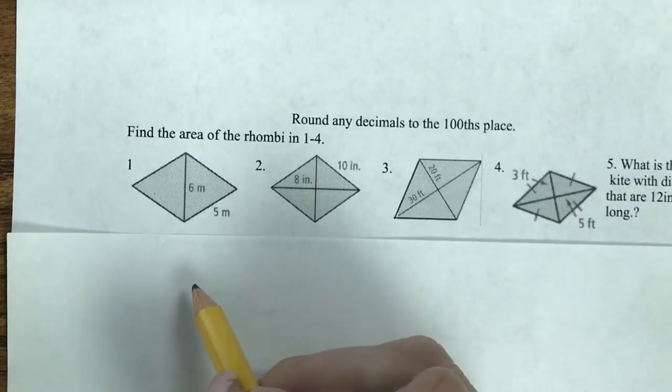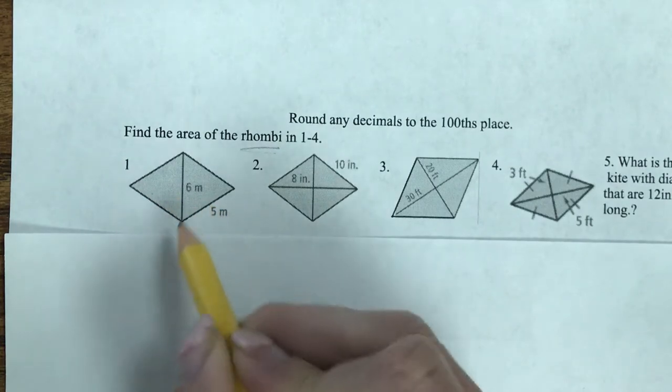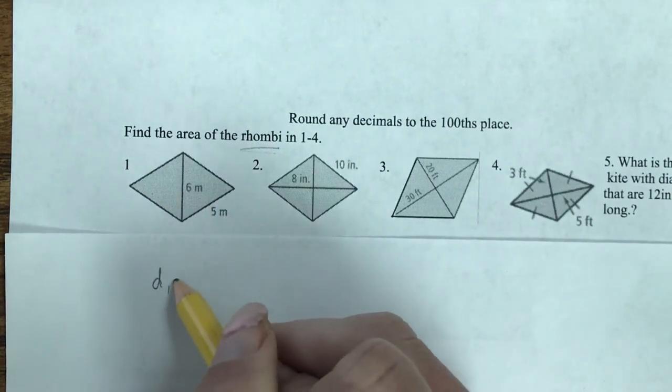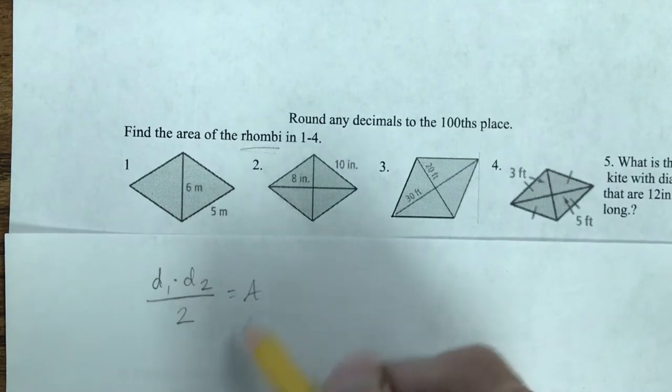Alright, in this video I'm going to solve number 1. I said that this was a rhombus, so I know that I can use the formula diagonal 1 times diagonal 2 divided by 2 to equal the area.